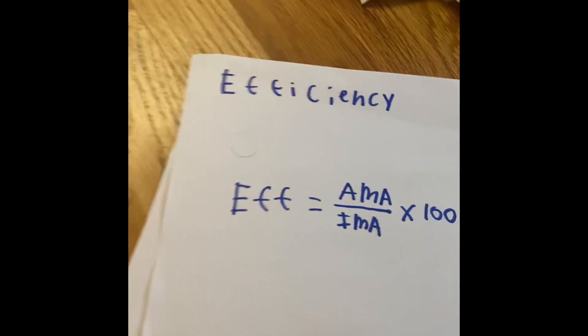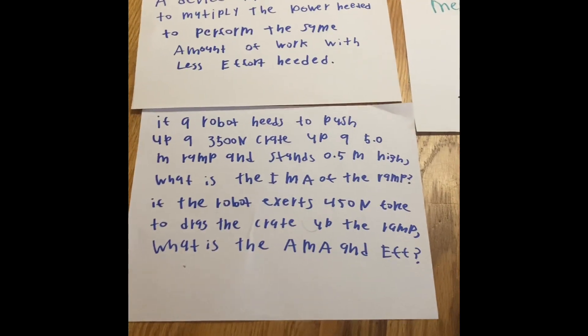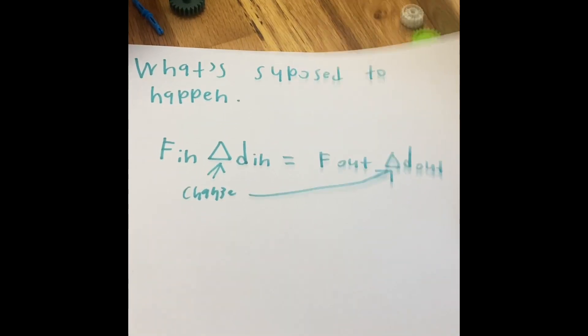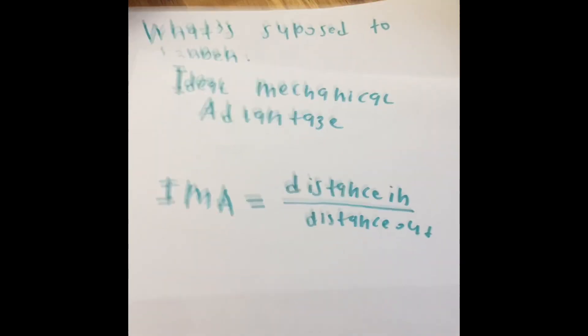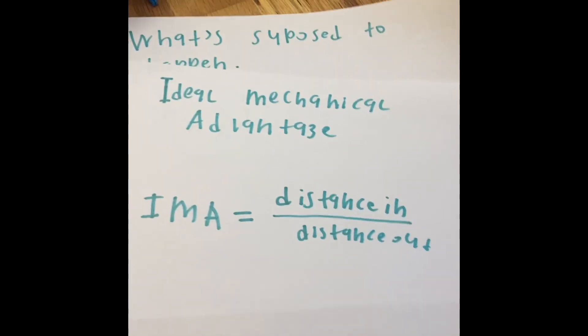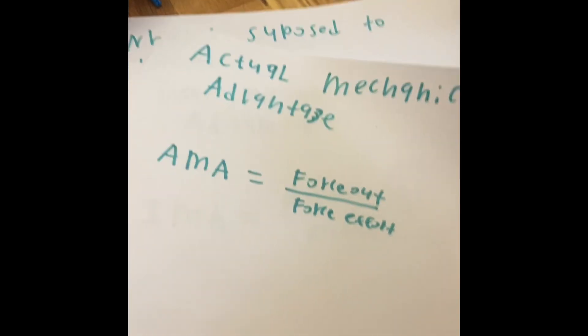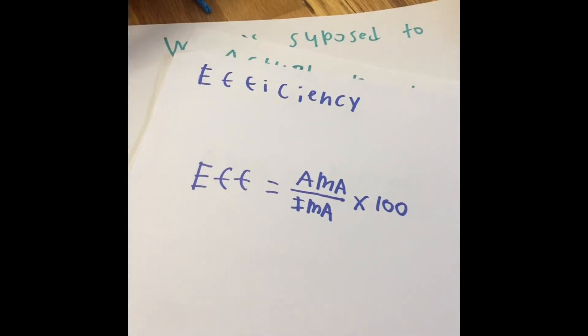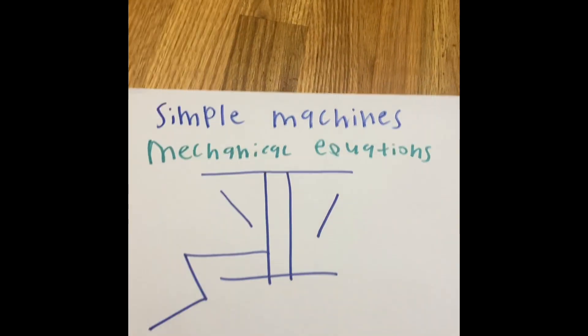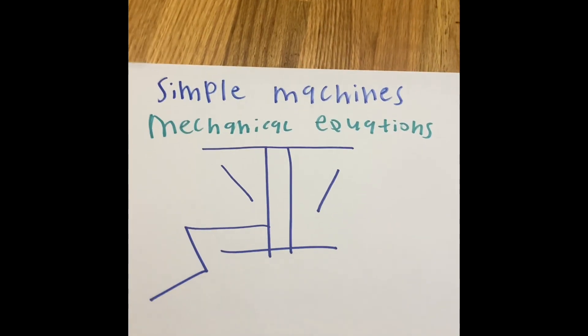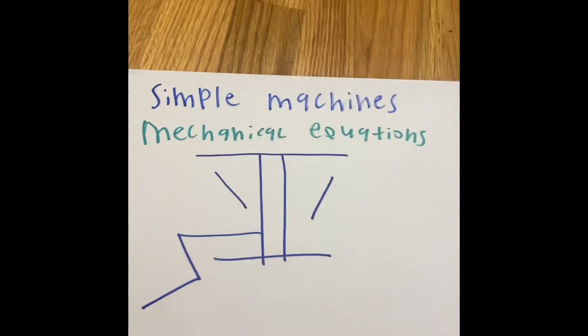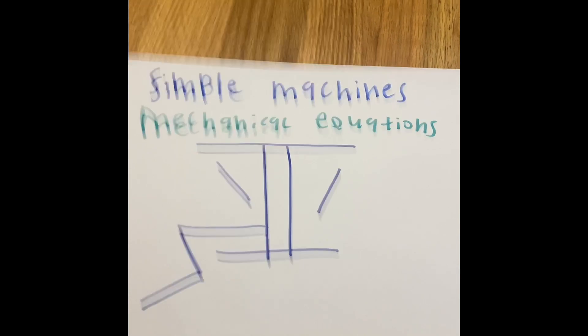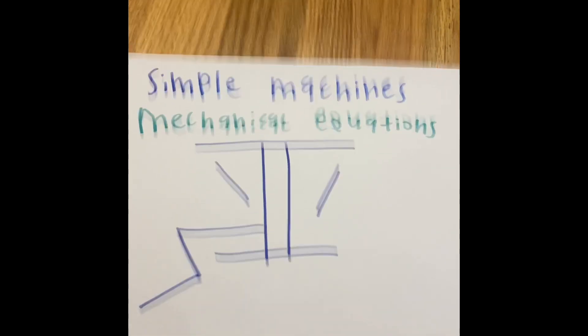So that completes the video. So we've learned about what's supposed to happen when we're working with machines. What the ideal mechanical advantage is. What the actual mechanical advantage is. And last but not least, the efficiency. I hope this video has helped you understand simple machines, and how to do the work problems and mechanical equations. Thank you for watching Topping Airlines Math Industry. Like and subscribe!